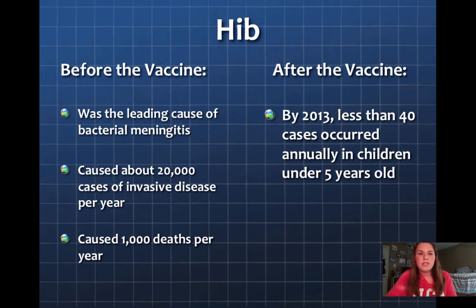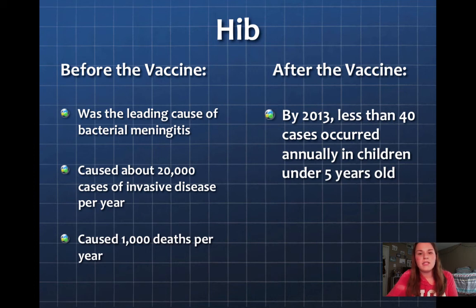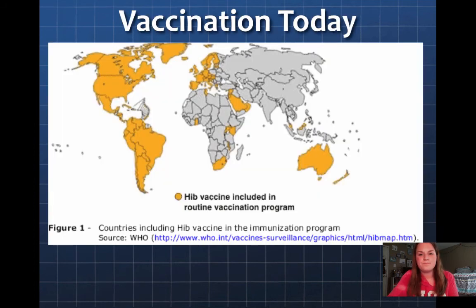Before the vaccine, HIV was a leading cause of bacterial meningitis and caused about 20,000 cases of invasive disease and 1,000 deaths per year. After the vaccine, in 2013, fewer than 40 cases occurred annually in children under five years old.